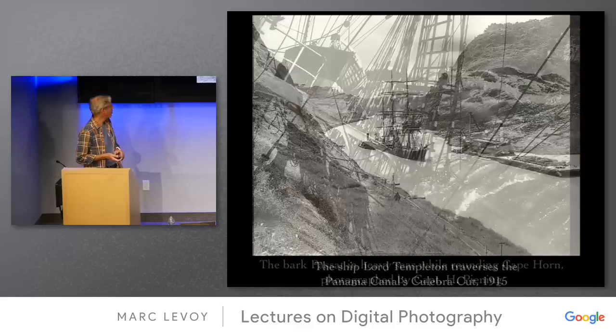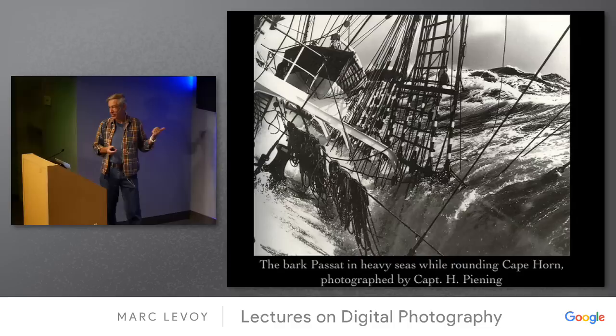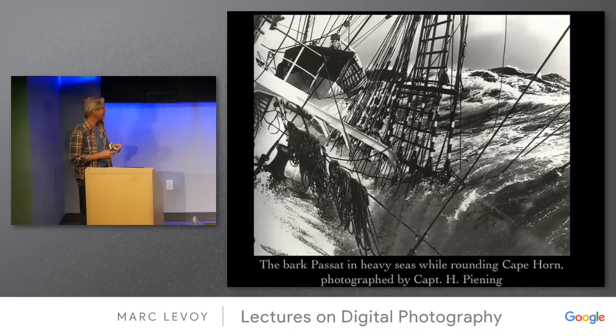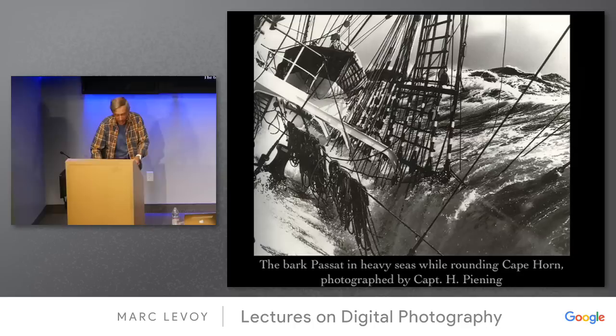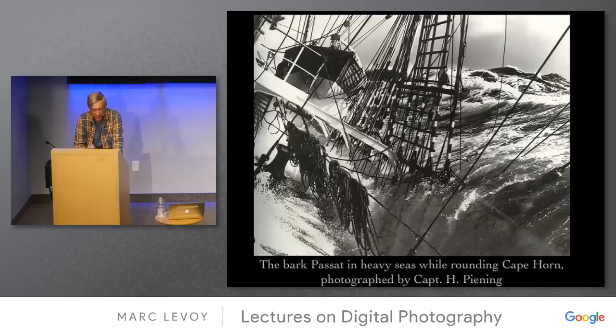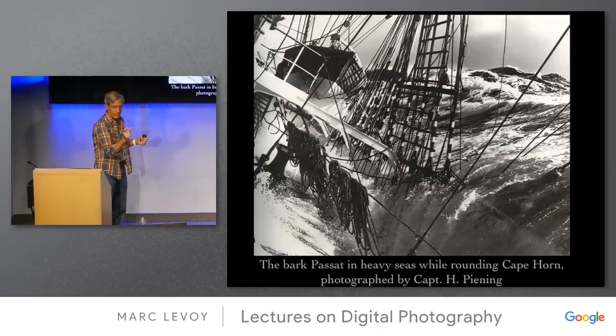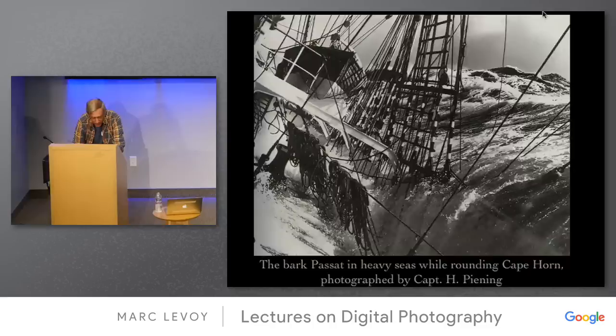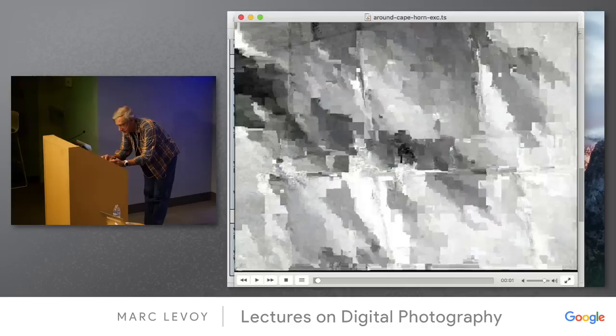Cape Horn was a nasty place — imagine trying to photograph that with a wet plate process. This was obviously done with a snapshot camera. There's an absolutely unique movie from this era: a magical overlap of the period of cinematography and the period of square-rigged sailing ships. There's only one movie like this known. Let me play it.